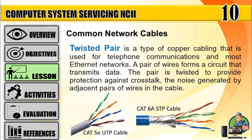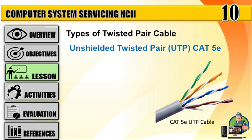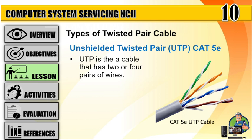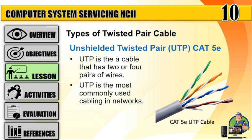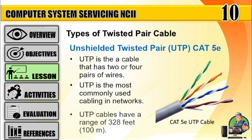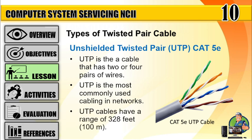Number 3: Twisted pair — a type of copper cabling used for telephone communications and most ethernet networks. A pair of wires forms a circuit that transmits data. The pair is twisted to provide protection against crosstalk, the noise generated by adjacent pairs of wires in the cable. Number 1: Unshielded Twisted Pair (UTP) Cat5e — UTP is a cable that has two or four pairs of wires; it is the most commonly used cabling in networks. UTP cables have a range of 328 feet (100 meters).